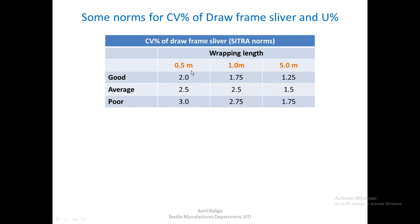For a cut length of 1 meter, the good CV value is 1.75%, average is 2.5%, and poor is 2.75%. For a cut length of 5 meters, the good CV value is 1.25%, average is 1.5%, and poor is 1.75%. We observe that the CV standard decreases as we increase the cut length, because a longer cut length introduces an averaging effect, which means a lower standard needs to be set.